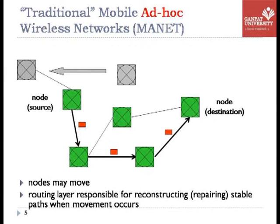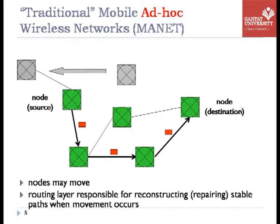In the mobile ad hoc network, a node may move, and when a node moves, there may be no more connection. We have to reconstruct the path, and it is the routing layer which is responsible for repairing the path. Once that path gets repaired, you can find a stable path for sending the packet from source to destination.